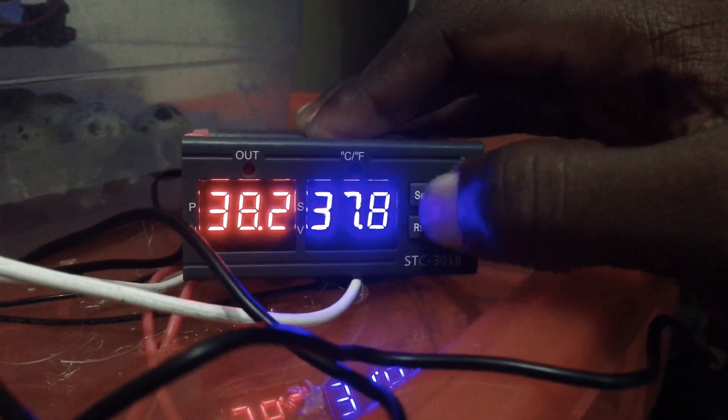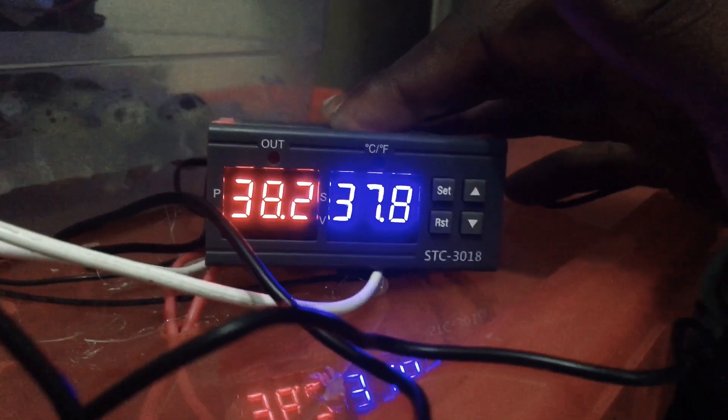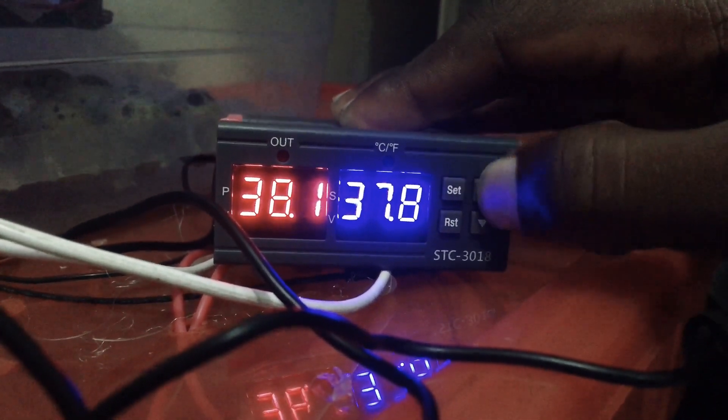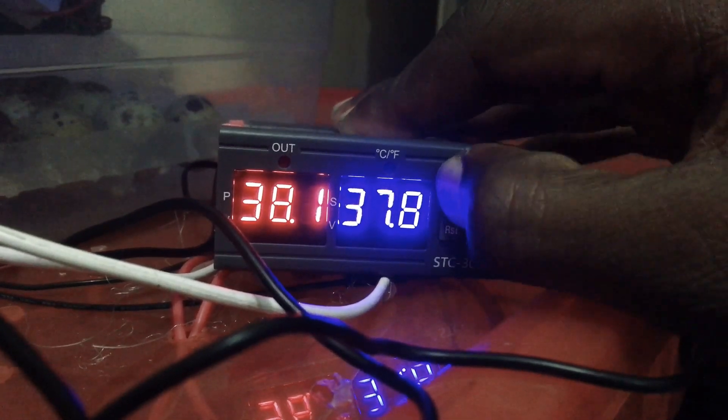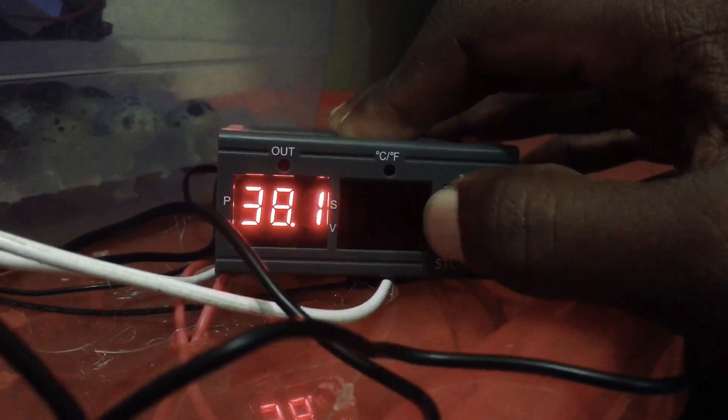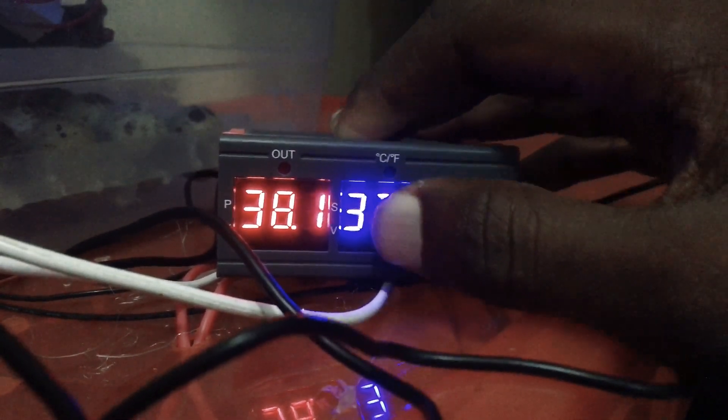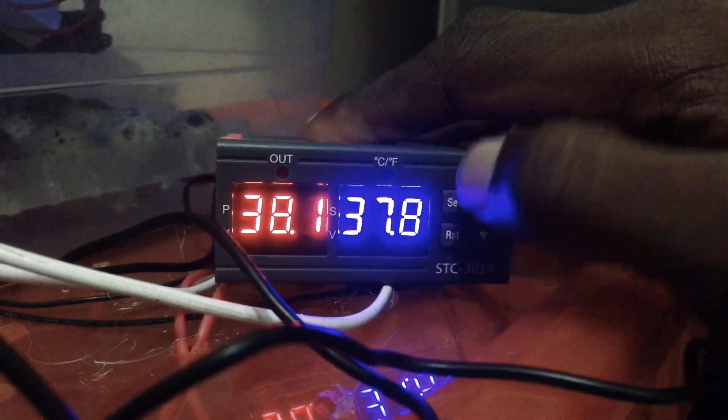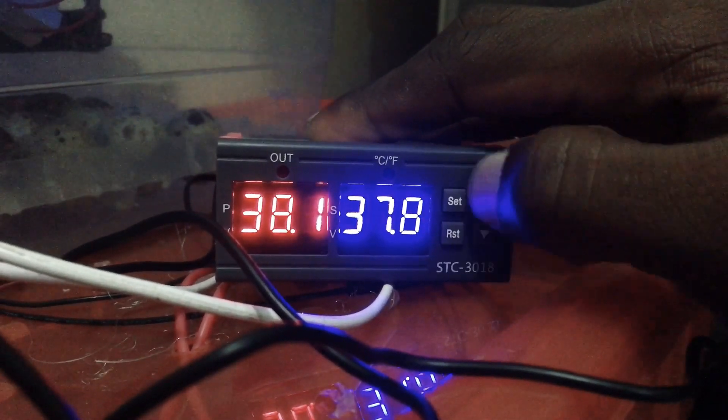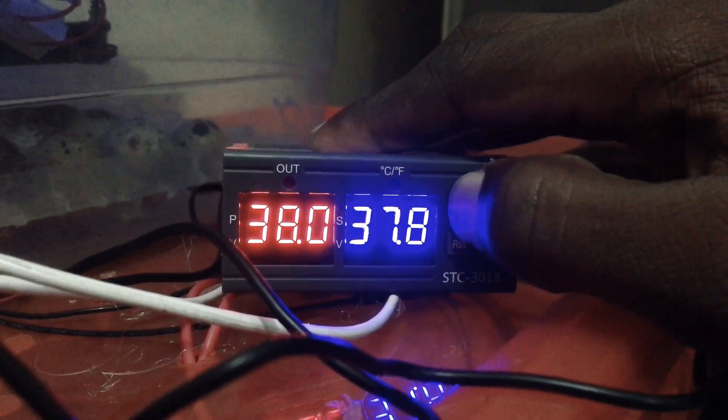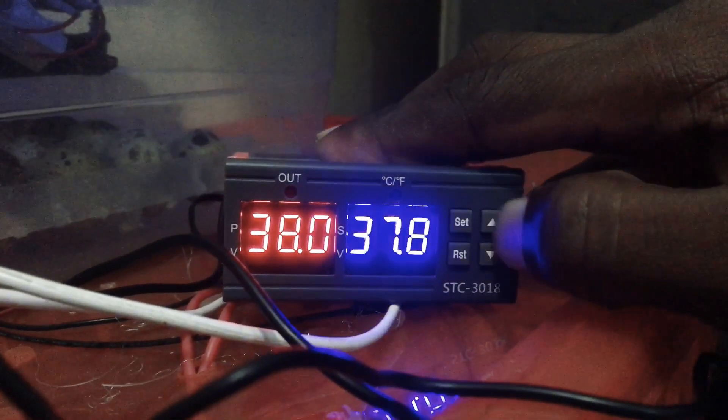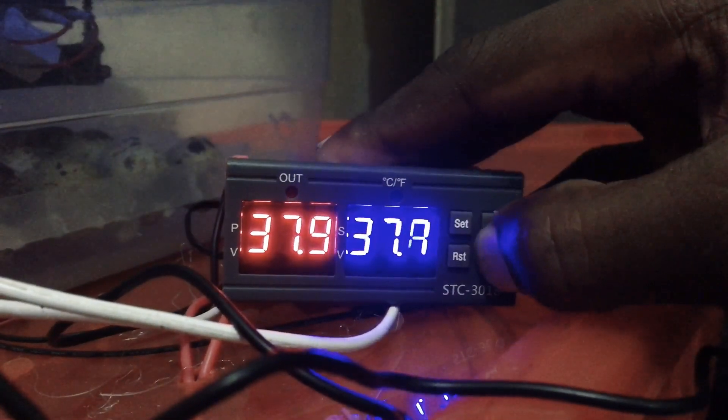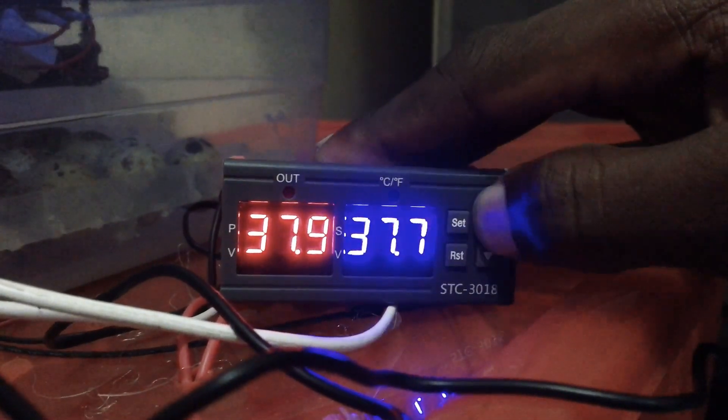We're going to press the set once until you see this side blinking - that is the temperature you want it to reach. You see it blinking? Then you press it once, set once, then now set it to the temperature you want it to be set at.